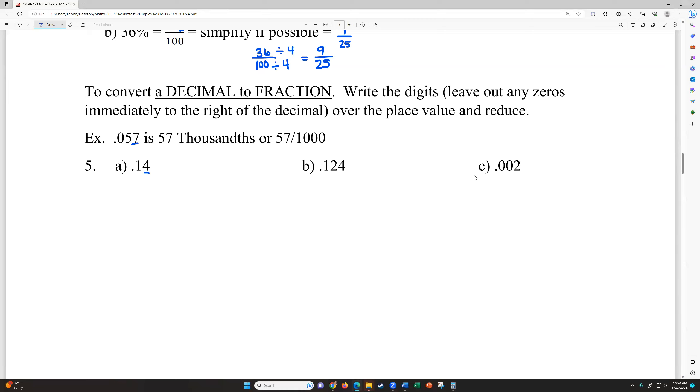For example, this one, the last place value is in the hundredth. So we would write this as 14 over a hundred and we would reduce that. They're both divisible by two. So that would be seven over 50.